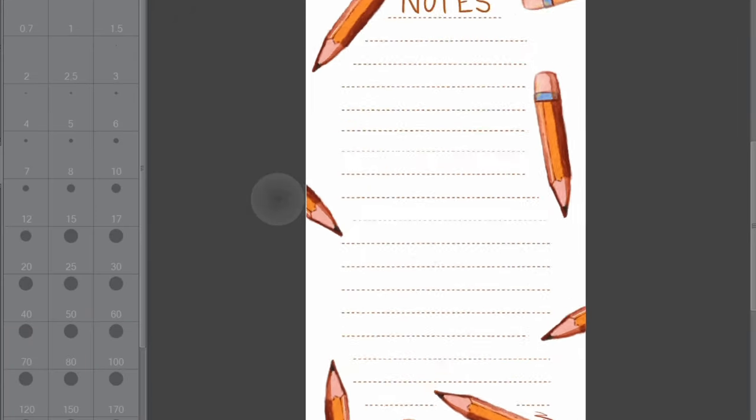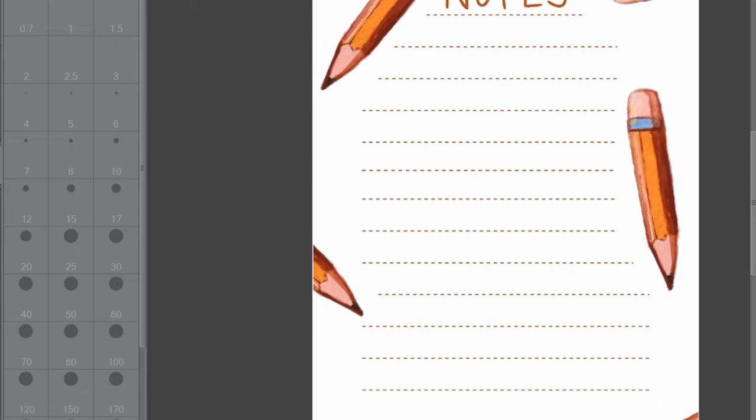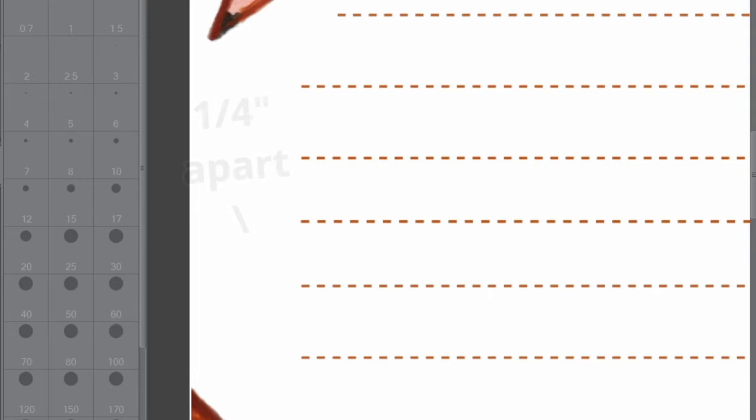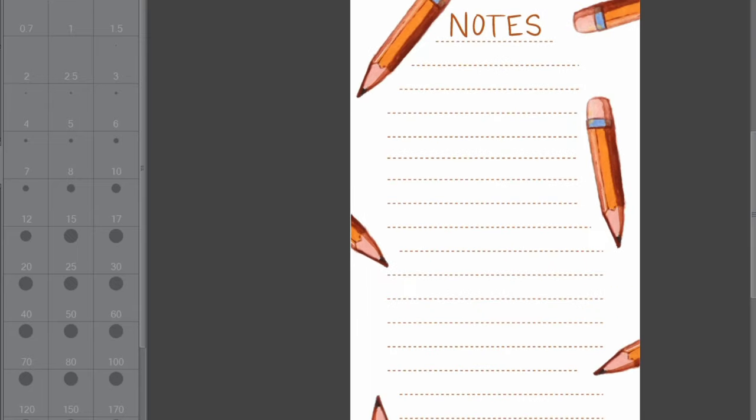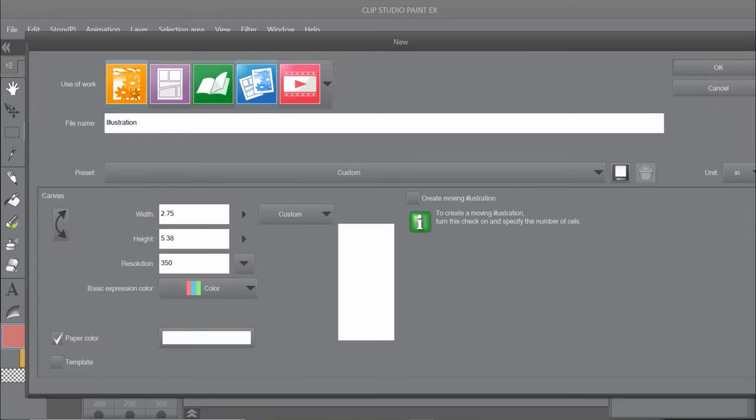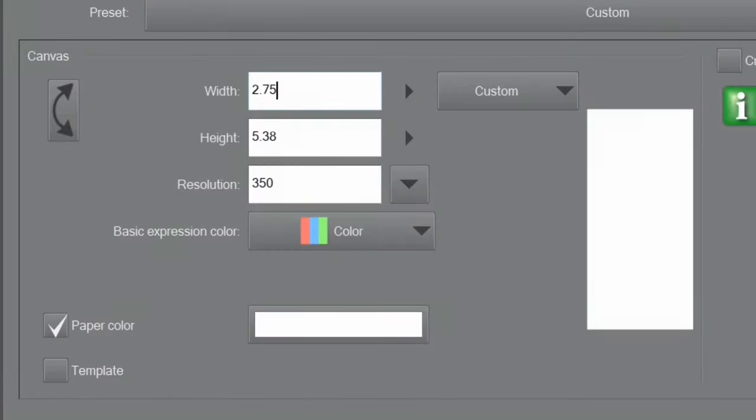Also, if you're curious about how far apart I spaced the lines, they're about a quarter of an inch apart, but I wasn't super specific about it. I just kind of spaced them out as wide as I felt would be comfortable for writing. Once you're done with your design and you've exported it, it's time to line them up for printing.